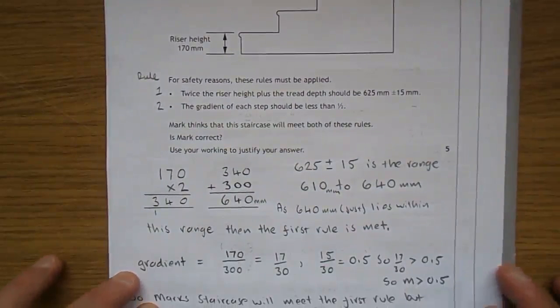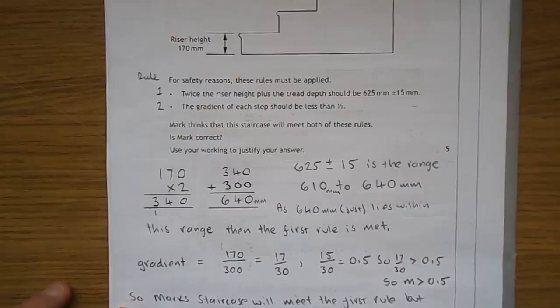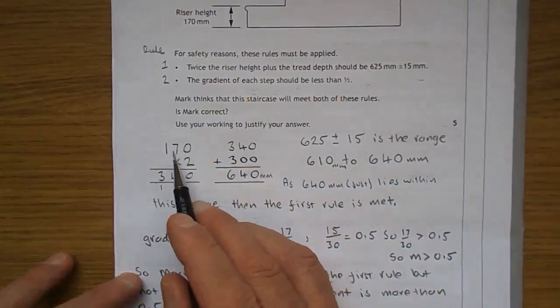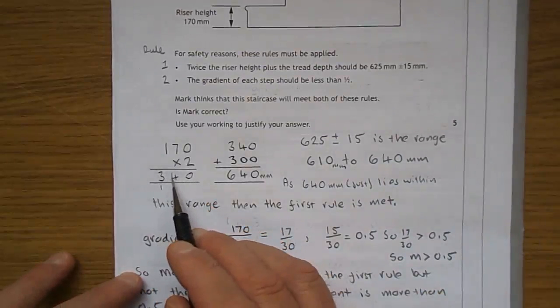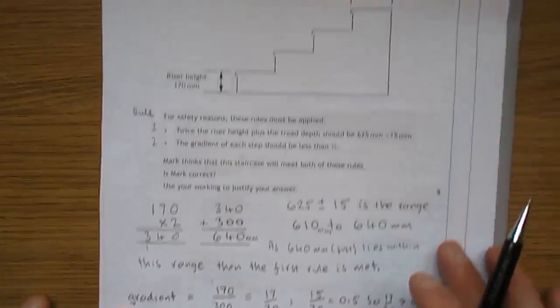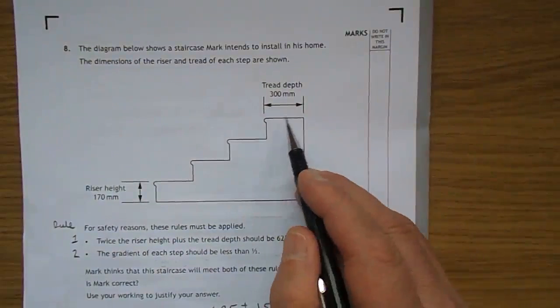And of course, Mark thinks the staircase is okay. Is he correct? So let's work on rule 1. Twice the riser height, 2 times 170 is 340, plus the tread depth, 300.